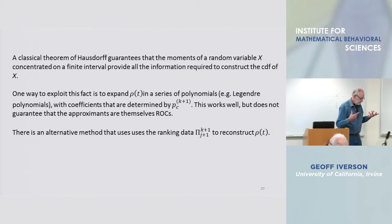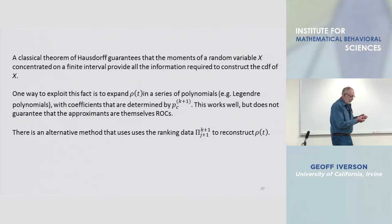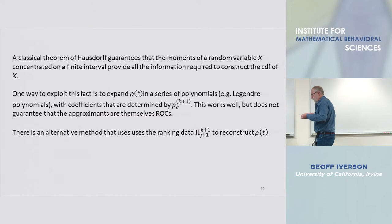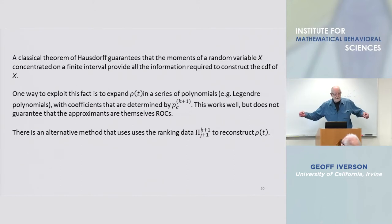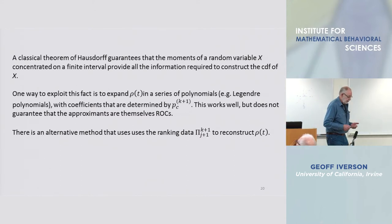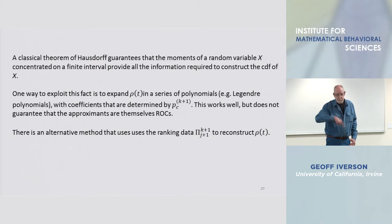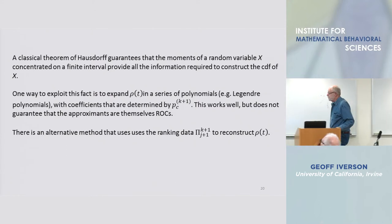Now let's talk about recovering the ROC when you have either the full set of forced choice data. You have an infinite sequence of experiments. Why infinite? Because each experiment only gives you one number, you got to reconstruct the whole function, so you are going to have to use your numbers judiciously.